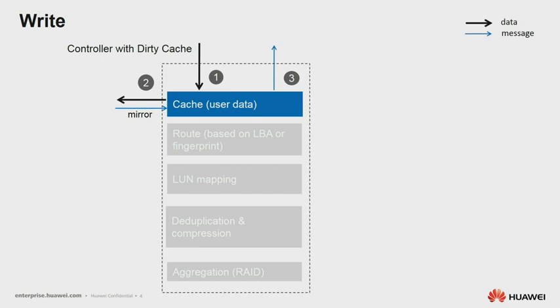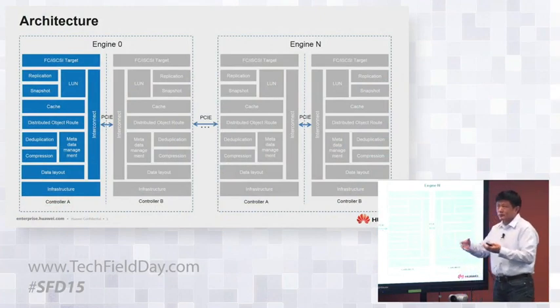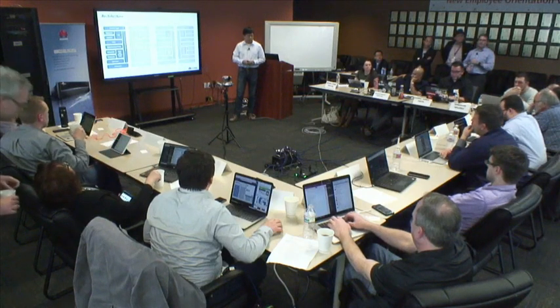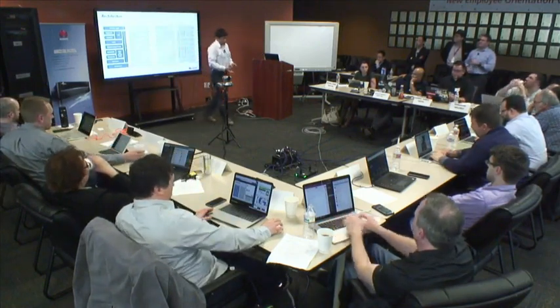I'll describe the write flow and read flow, then describe the internal data structures. The engines are connected through PCIe. Within each enclosure, there are two controllers in one engine. When you connect multiple engines, you use PCIe cables to connect them. The storage is also PCIe connected to each engine. The drives can be either NVMe or SAS.